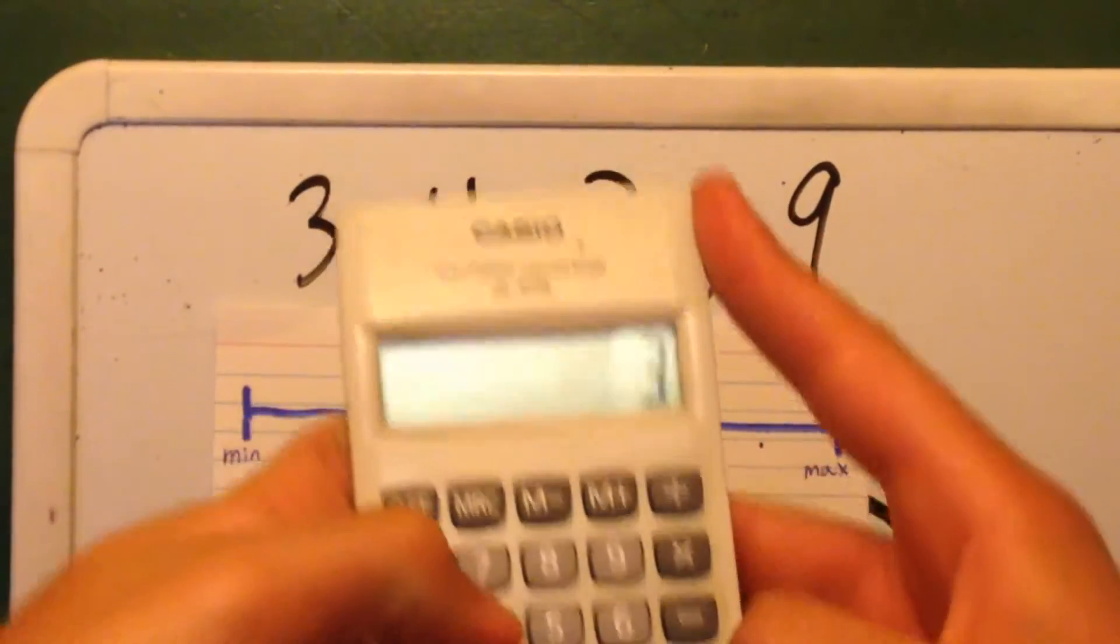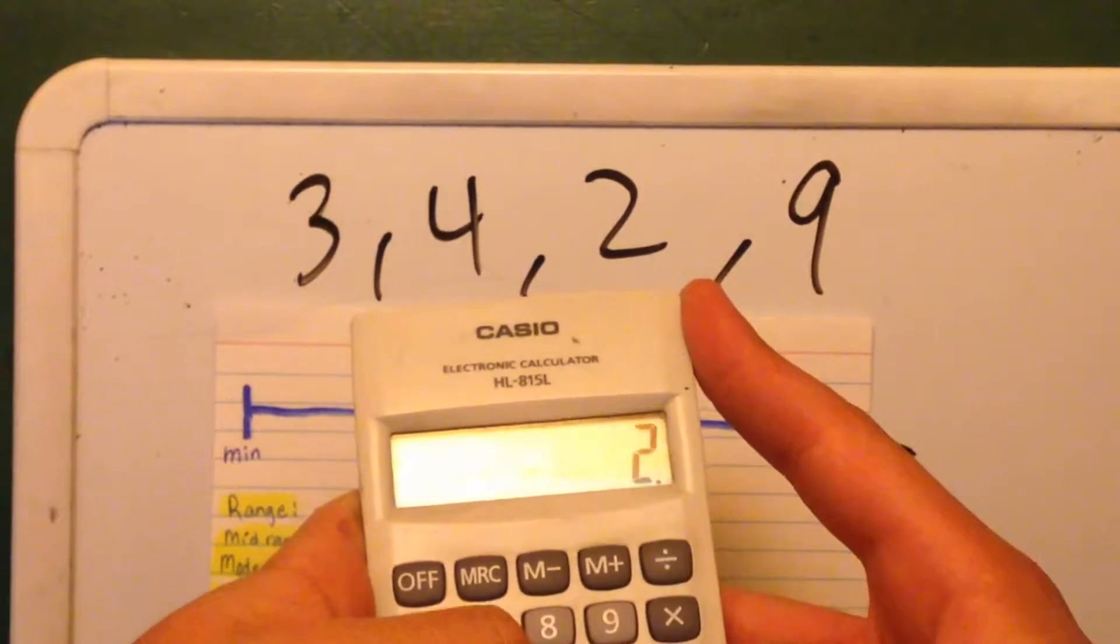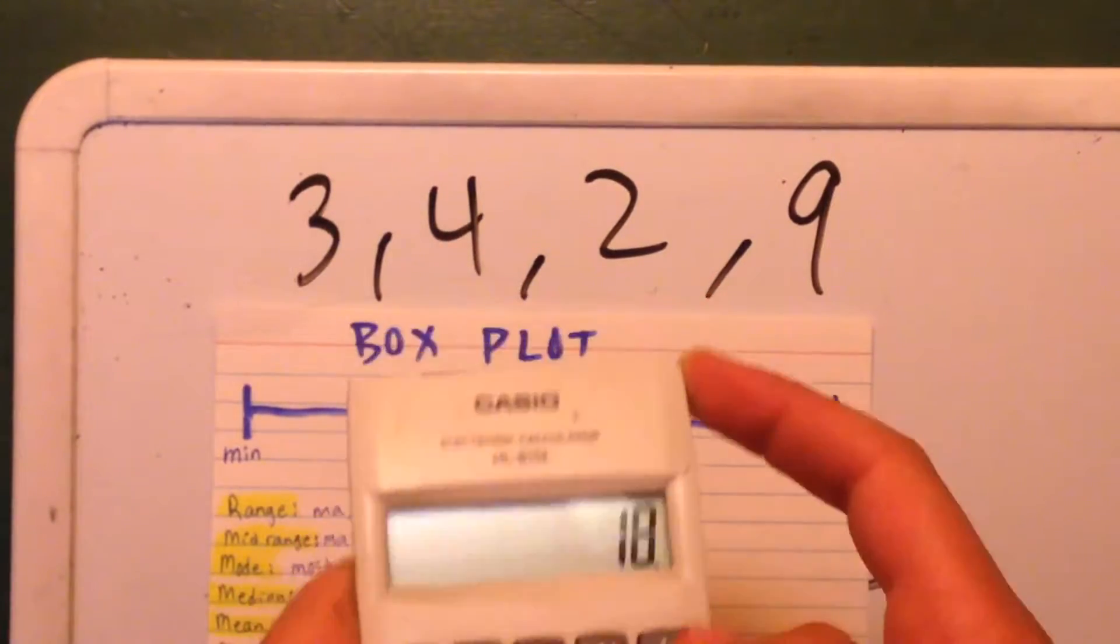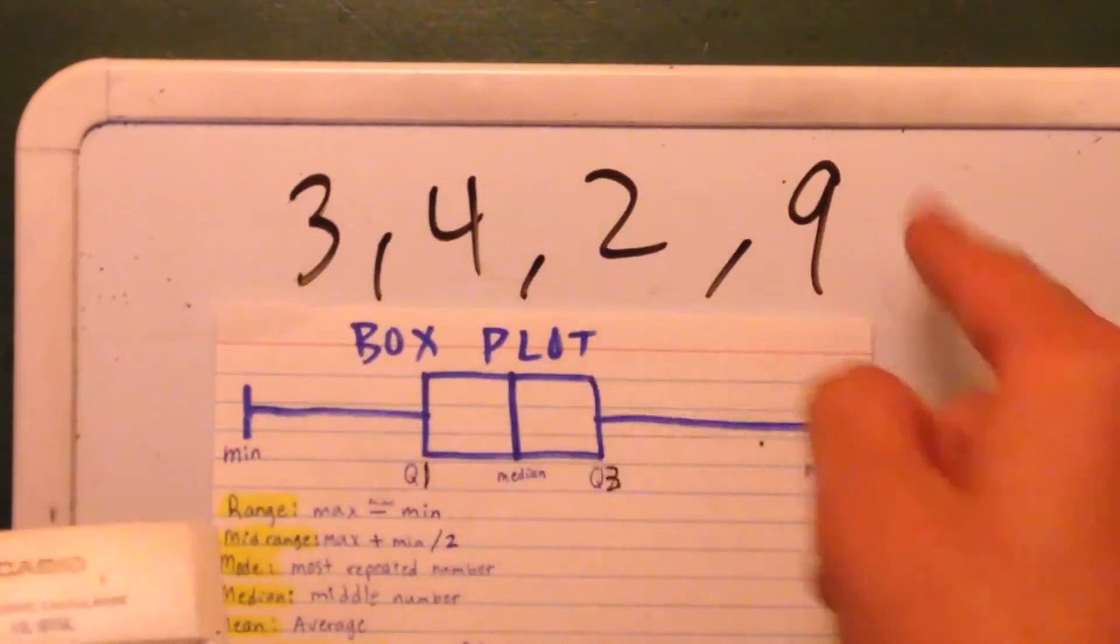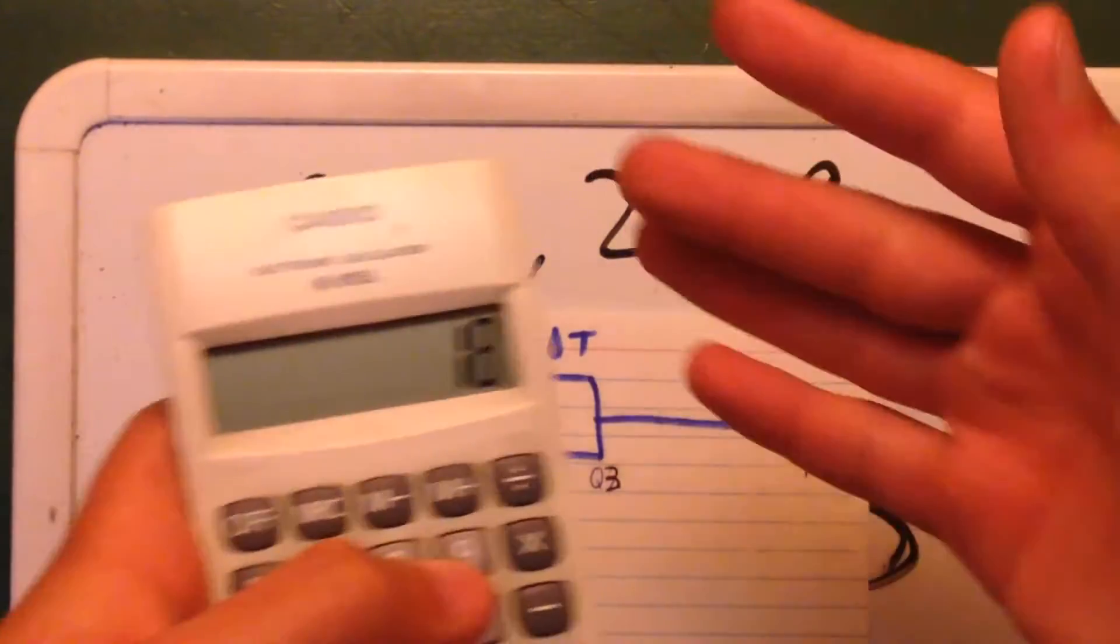Alright, so 3 plus 4 plus 2 and plus 9. And we're going to divide by the quantity, which is 4, and that's going to give us our mean.